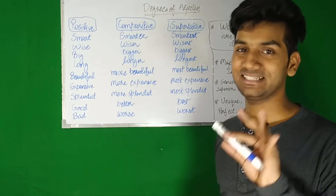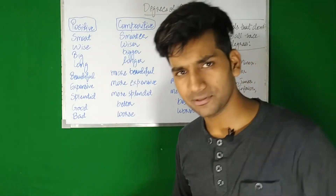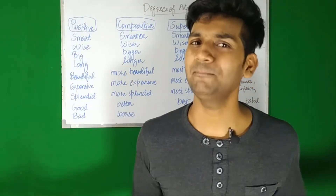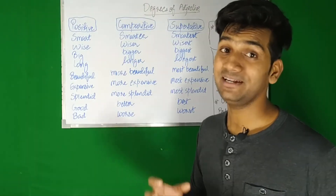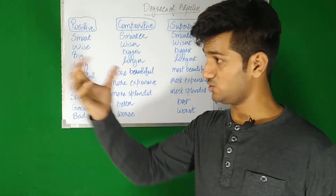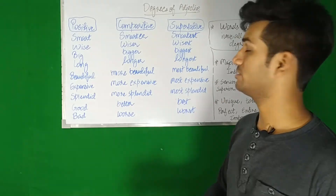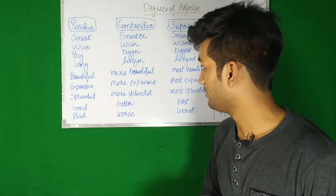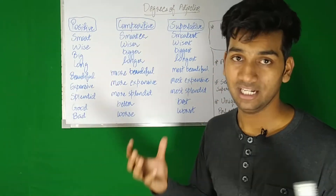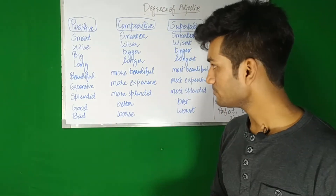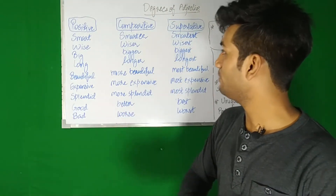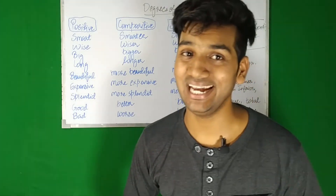Let us understand through examples. Smart, smarter, smartest. Wise, wiser, wisest. 'He's a wise person. He's wiser than his brother. He's the wisest sibling in his family.' Big, bigger, biggest - 'It's a big house. It is bigger than your house. It is the biggest house in my colony.' Long, longer, longest. Most adjectives are changed into comparative and superlative degrees by simply adding -ER and -EST at the end of them.